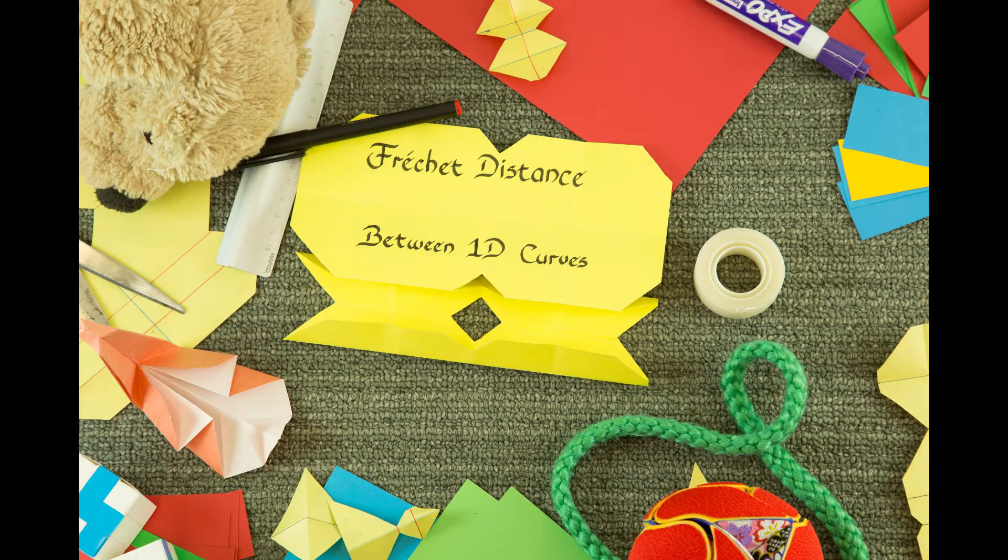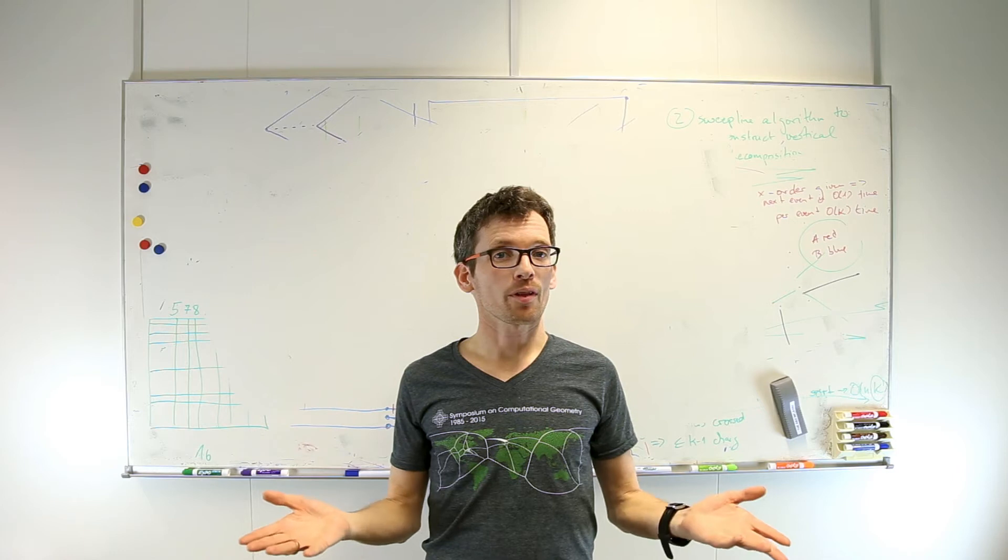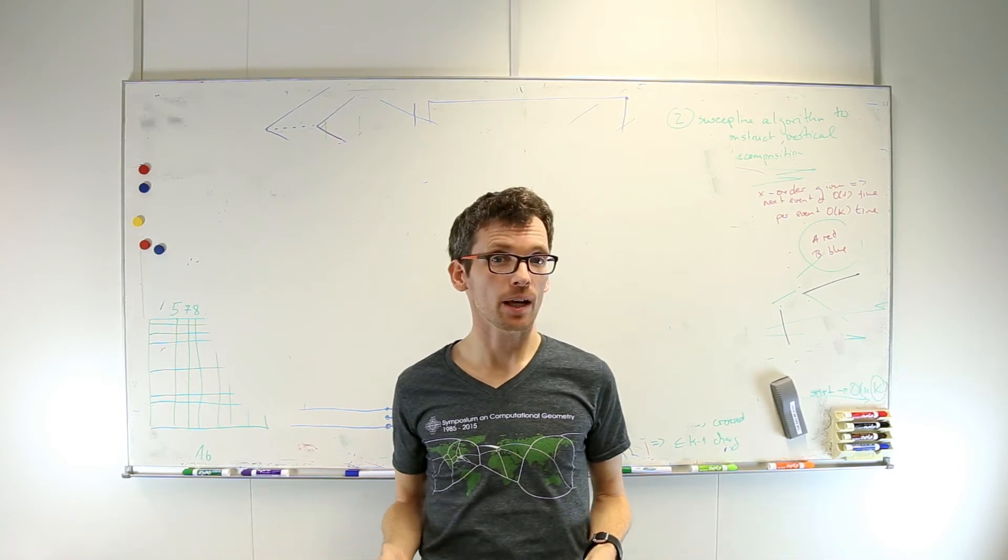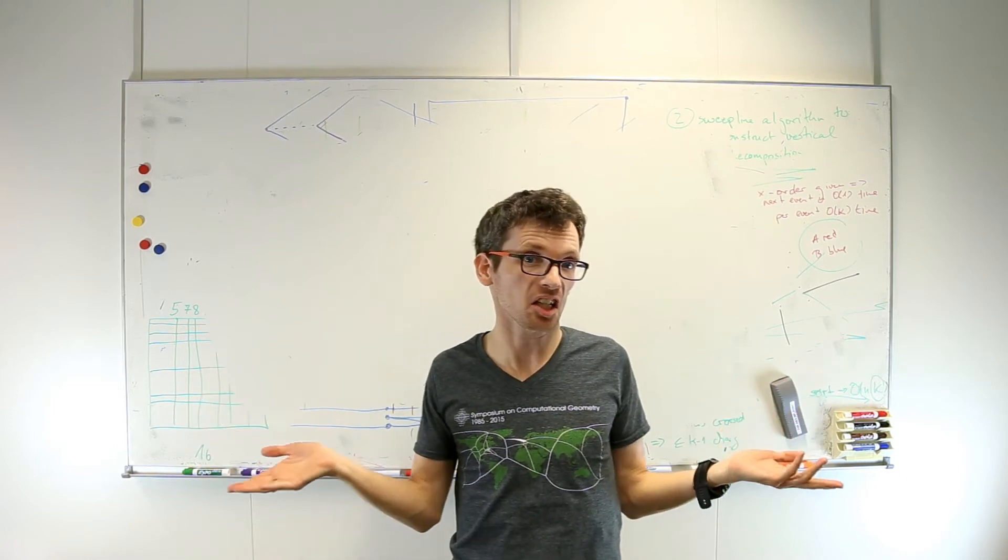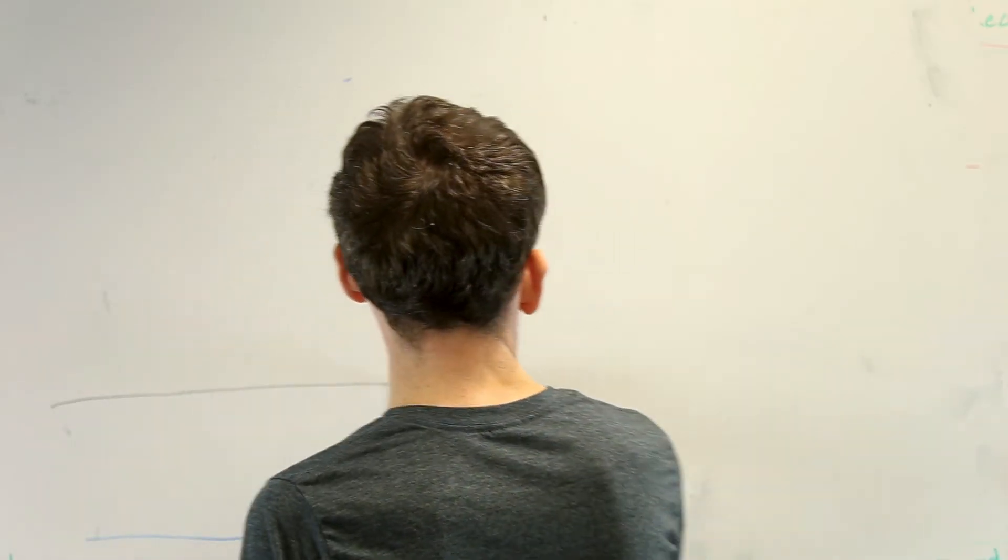What does the free space diagram look like in one dimension? When we think of curves, we tend to think of them living in spaces of two or more dimensions. However, mathematically, there is no reason why a curve cannot be embedded in a one-dimensional space, that is, a line.